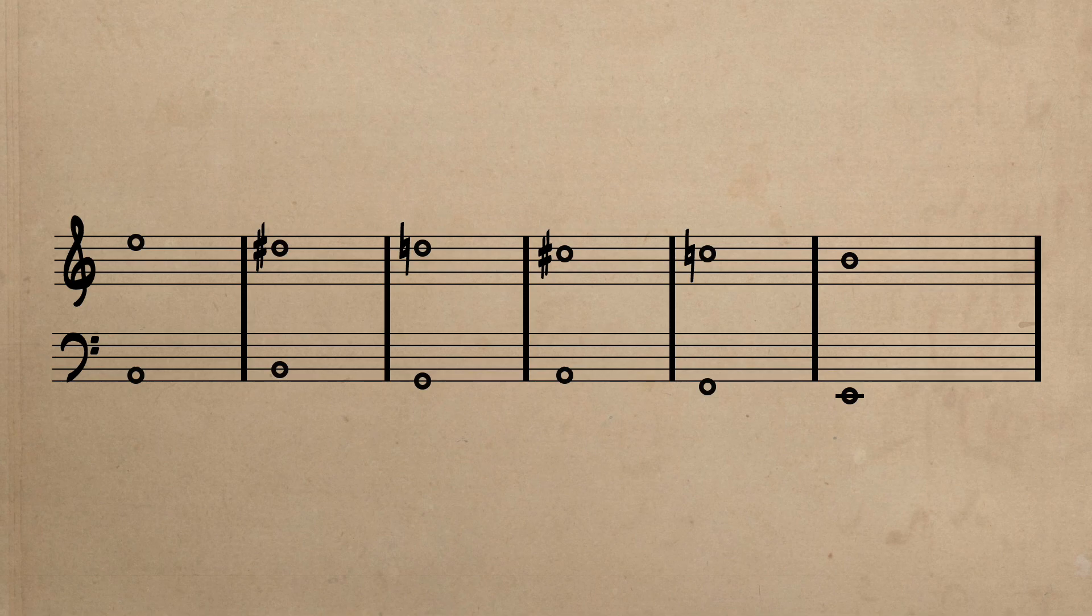Upon doing so, we'll discover a series of alternating twelfths and tenths, or fifths and thirds, in measures 1 through 4, with consecutive or parallel twelfths in measures 5 and 6.